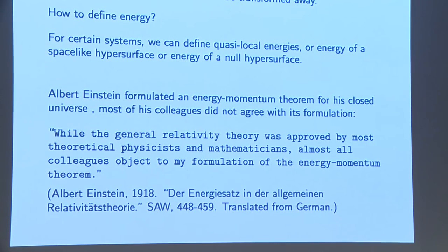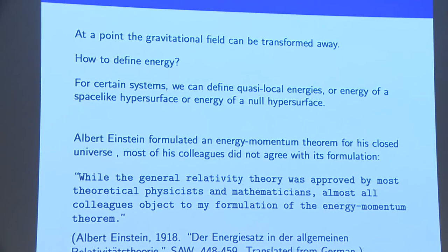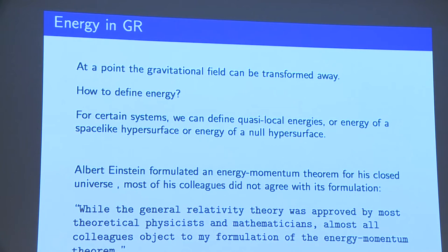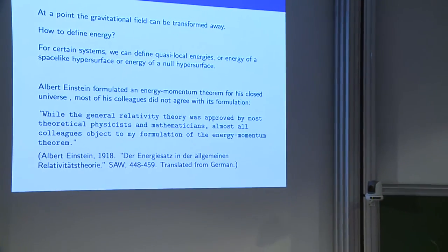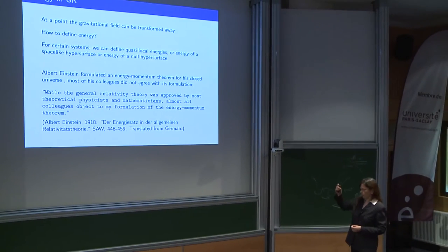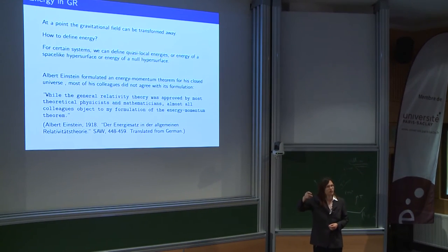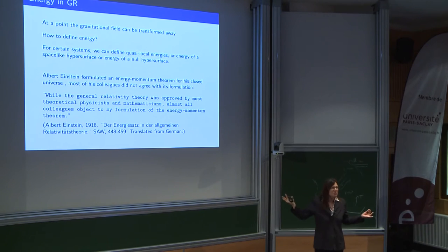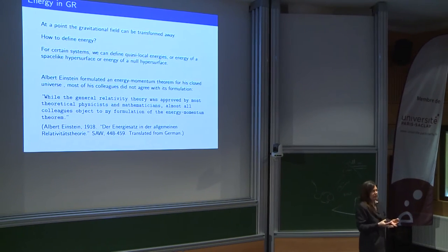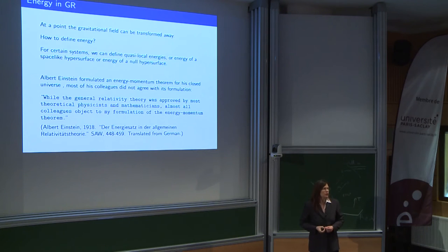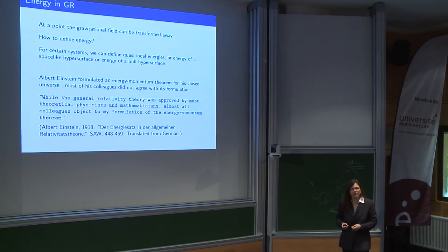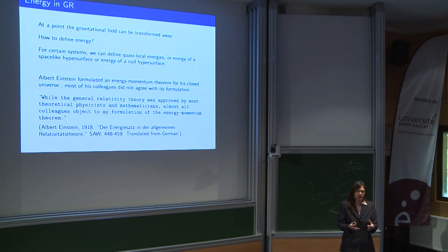Let me say something about energy in GR. When we think about PDEs we need to find energies to control solutions. If you take the most naive approach in GR, things might fail. One problem: if I am sitting at a point in GR, I can actually transform away the gravitational field — by a coordinate transformation I can make it zero. So how would you define energy at a point if you can transform away the field there? Maybe instead of looking at a point, we integrate over a sphere — something quasi-local.